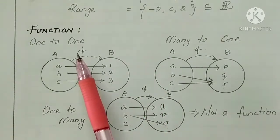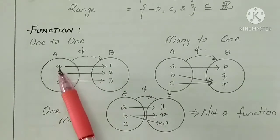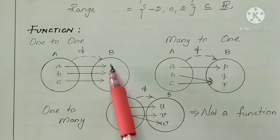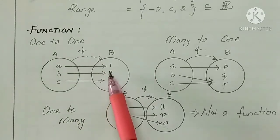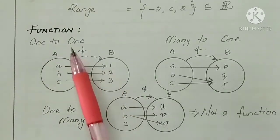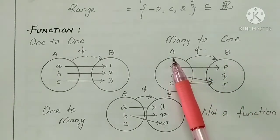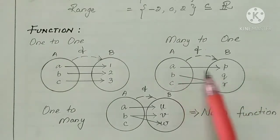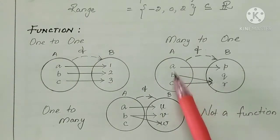Okay, now the first condition is the one-to-one function. A is the domain, B is the co-domain. A has 3 elements: a, b, c, and B has 3 elements: 1, 2, 3. F is a function. Each element in the domain has one element in the co-domain. That is the one-to-one condition.